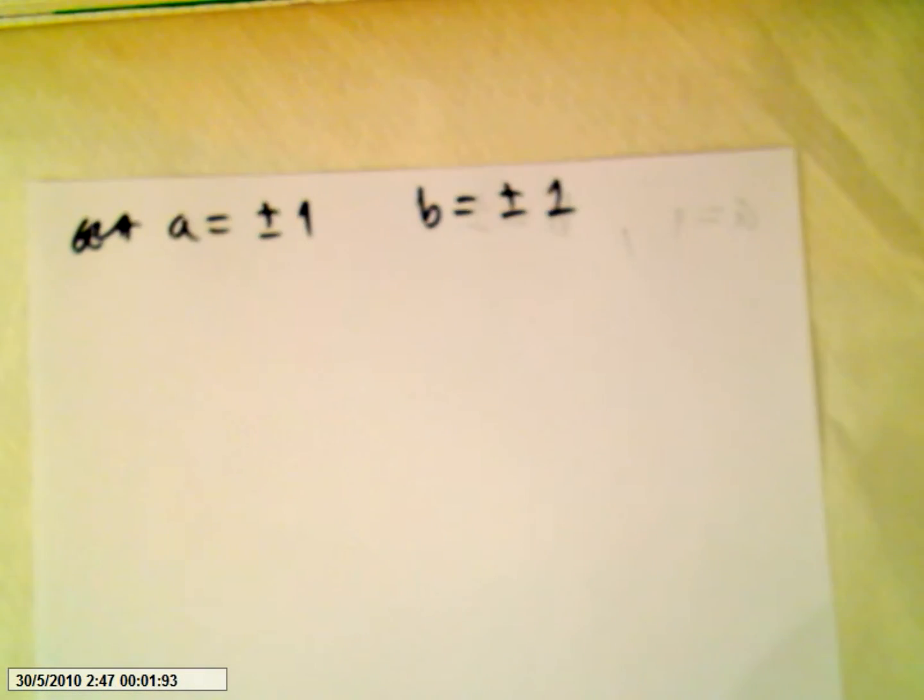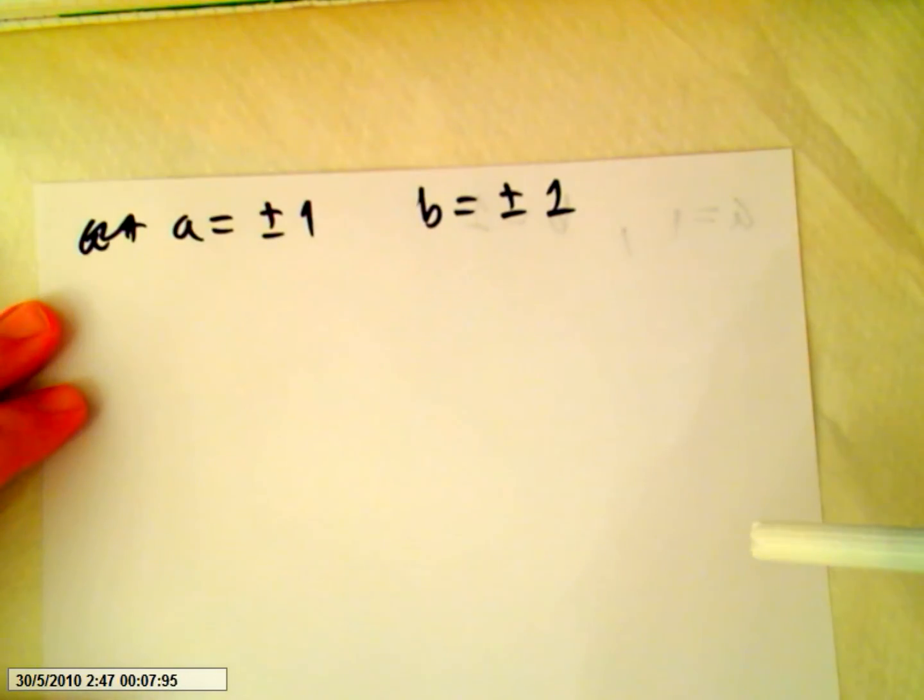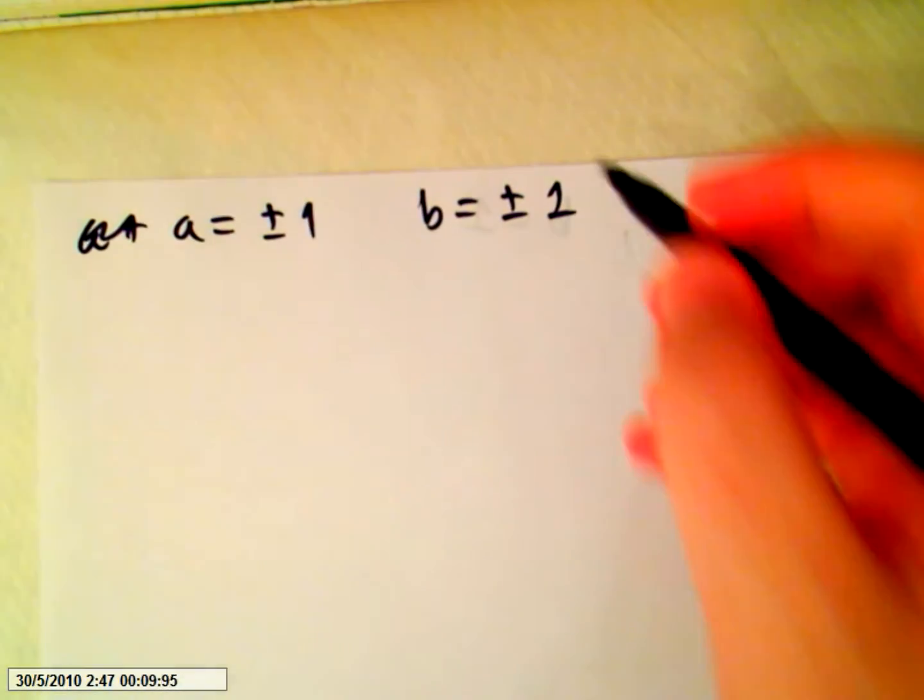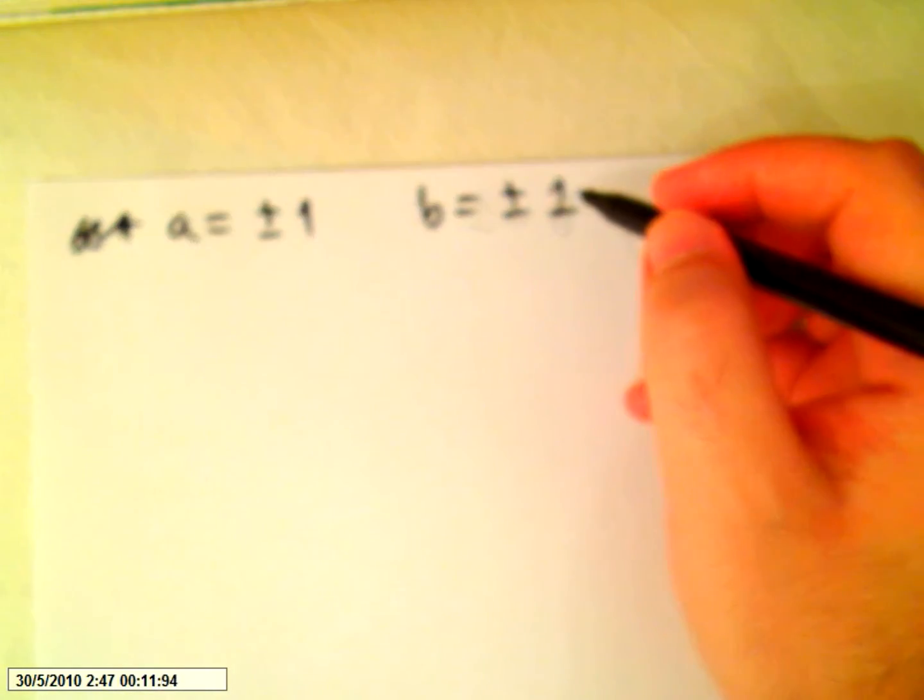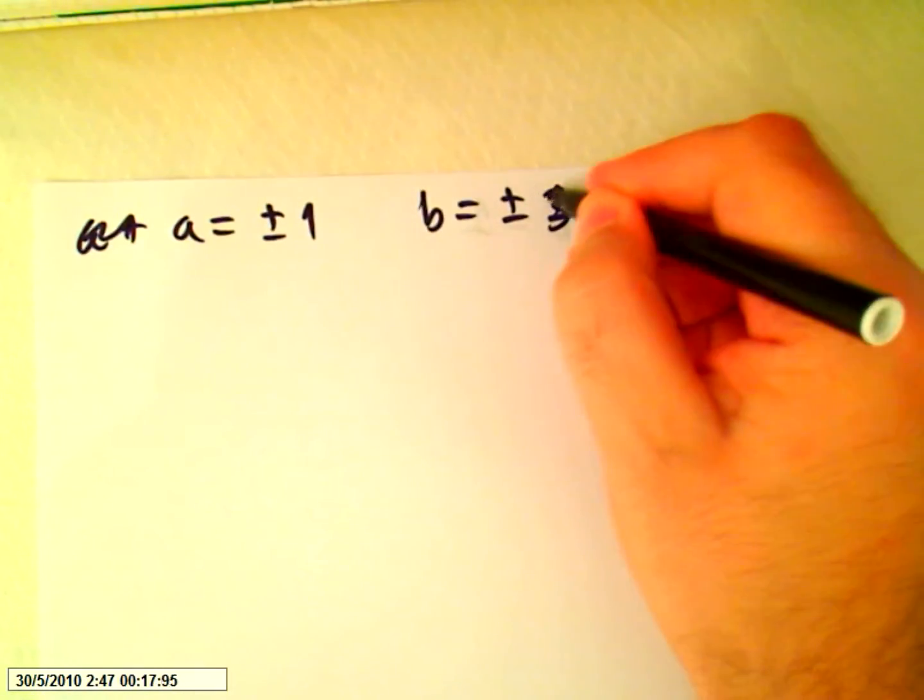This video is a continuation of the problem on linear transformation. So we were left with two values: one was a plus and minus 1, and b plus and minus 3.